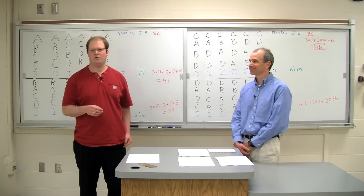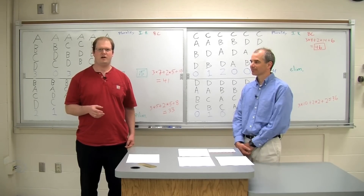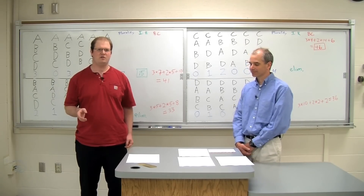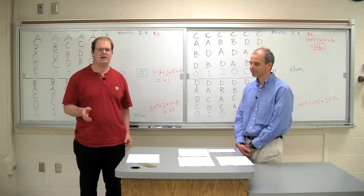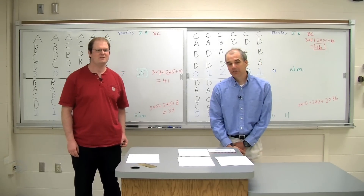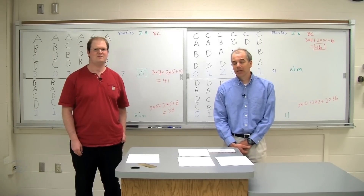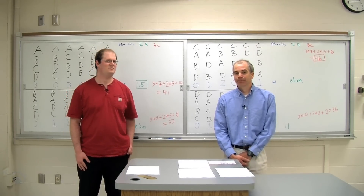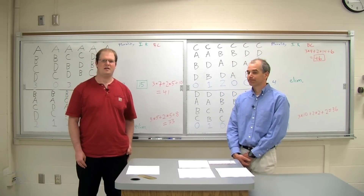Overall through the video today we've gone through several different types of voting methods: plurality voting, where simply the most first place votes win; instant runoff, where you eliminate the candidate with the least first place votes and redistribute their votes based on how people ranked them; and the Borda count, where you award points for each first place, second place, third place, and so on, and decide the winner by who has the most points. This concludes the classroom portion of the video. We hope you enjoyed it. We'd like you to discuss with your classmates: what was your favorite method of voting, and why? Even experts disagree on what the best voting method is, so it's common to have disagreement. Thank you very much — take care and good luck.